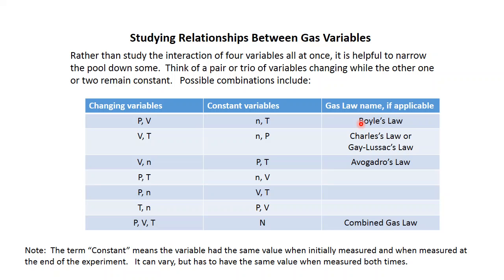These are the named laws — you've probably seen those in class as well. I want to point out something about the term 'constant' as we use it here. Constant means that this variable had the same value before I measured it as it does after I measured it; it does not mean it stayed the same the whole time. So I can go from five atmospheres up to 50 and all over the place — if I end up at five atmospheres, then we say the pressure was constant for that process.